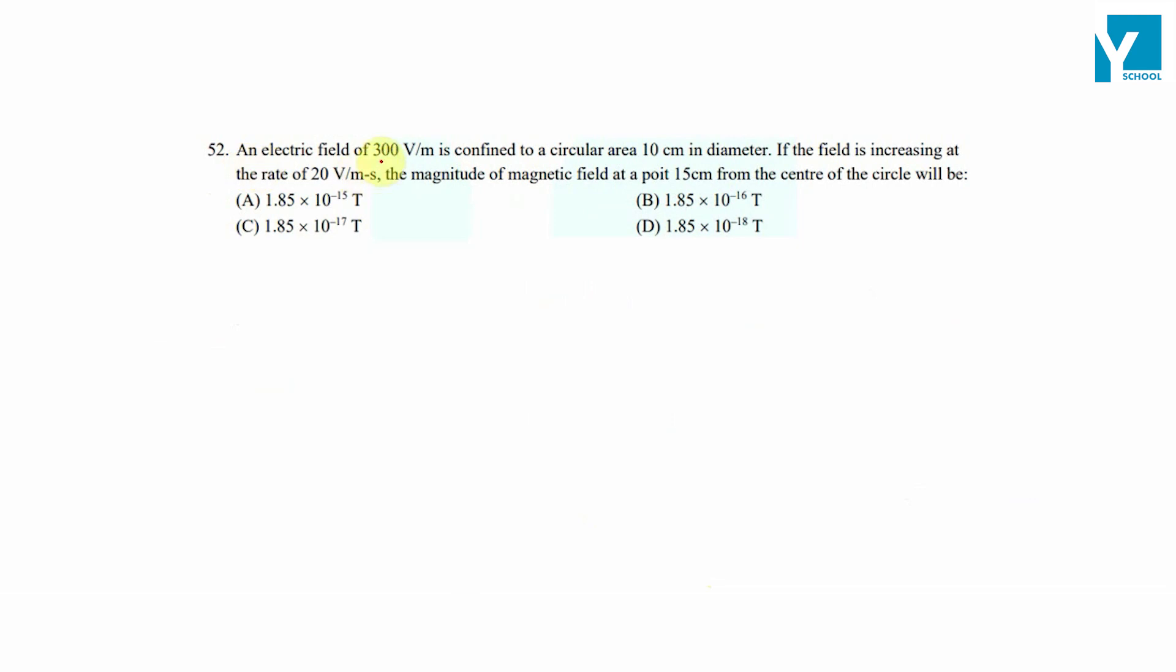An electric field of 300 volt per meter is confined to a circular area 10 centimeter in diameter. If the field is increasing at a rate of 20 volt per meter per second, the magnitude of magnetic field at a point...